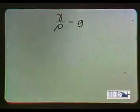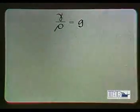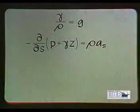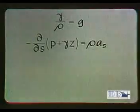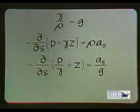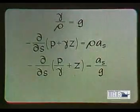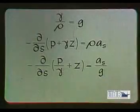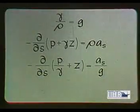If it is noted that the ratio of gamma to rho is the gravitational acceleration g, division of all terms of the foregoing equation by gamma will show that the sum of pressure head and elevation must change at a rate proportional to the relative acceleration in that direction.